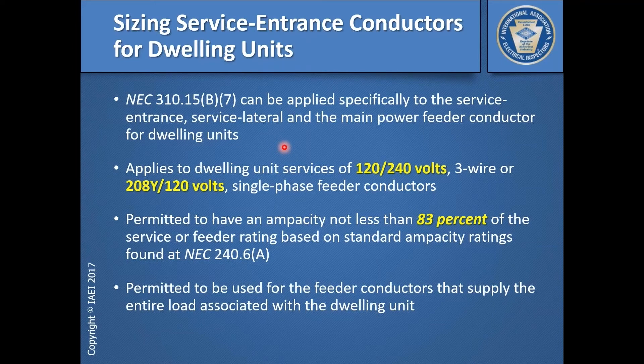Whereas if this were a laundromat or somewhere you had to go strictly by table 310.15(B)(16), then for that same 200 amperes you'd have to use 3 AWG copper. So you do get a bit of a break for your service entrance conductors.